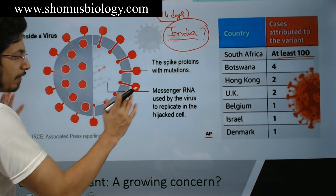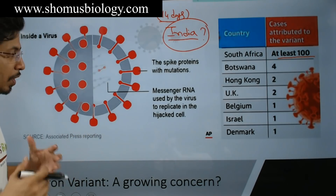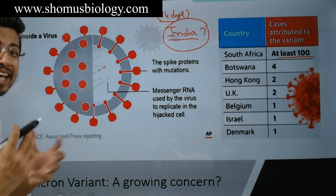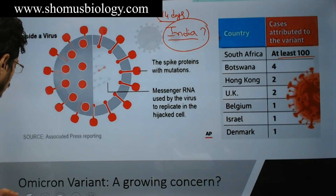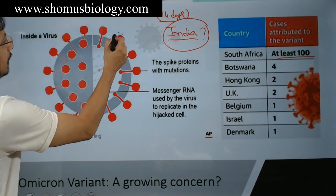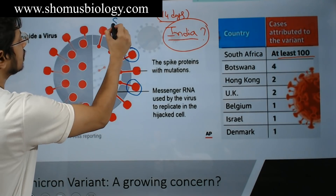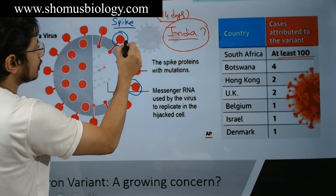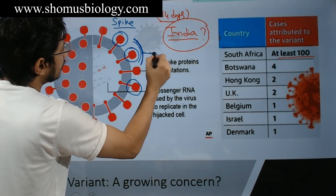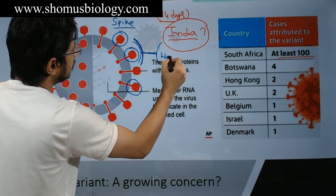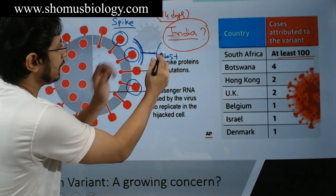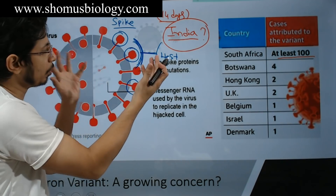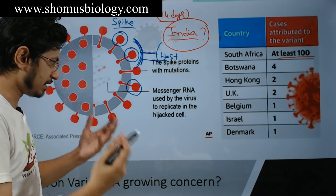All these different variants of SARS-CoV-2 always acquire mutations in the spike proteins. Spike proteins are the structures with which the virus interacts with our body cells using a lock-and-key fitting model. Our cells have a kind of lock, and the spike proteins are just like a key — they connect to the lock, open it, and the virus can go inside our body and start showing symptoms.